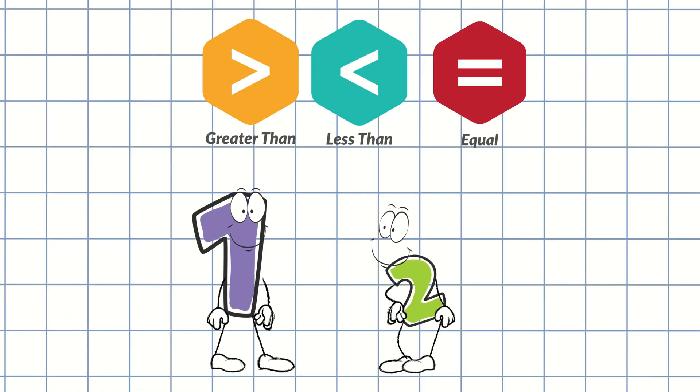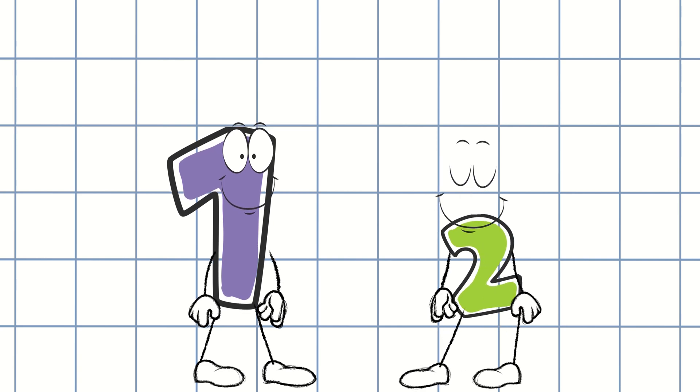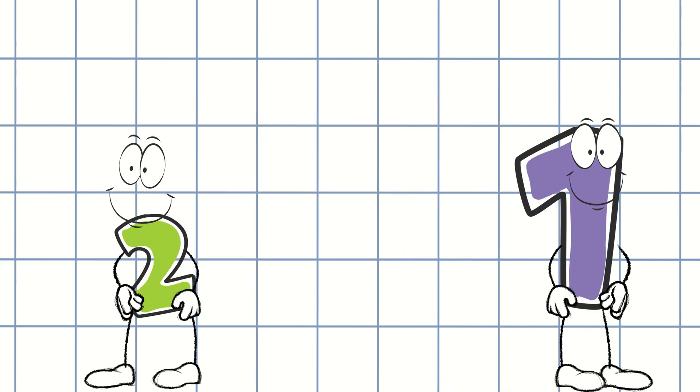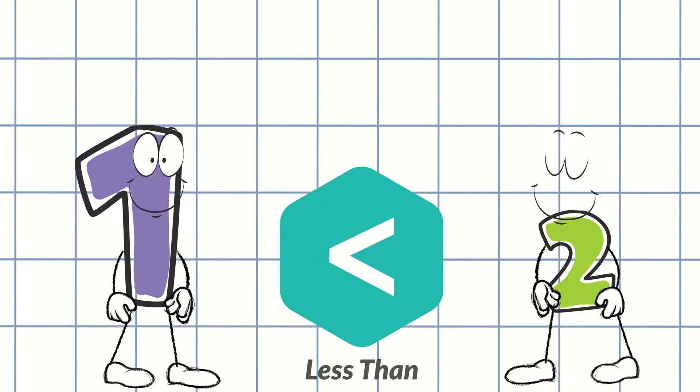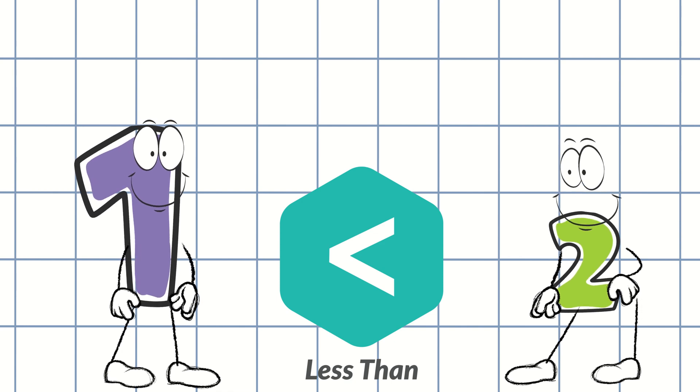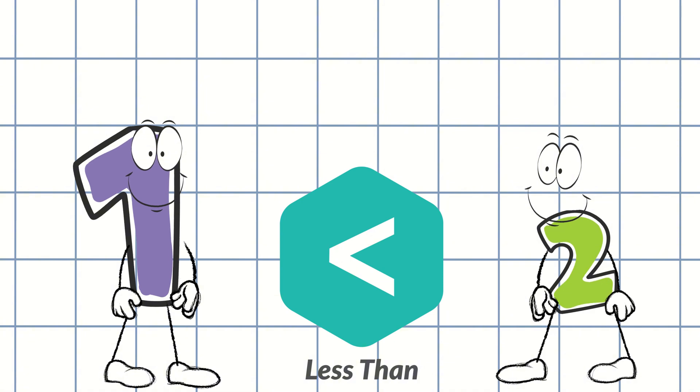Okay, here we have number one and number two. Let's see which one is greater. See, number two is actually greater than number one. We say greater when a number has more value. And number one is less than number two because it has less value.